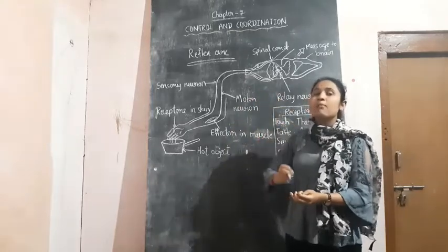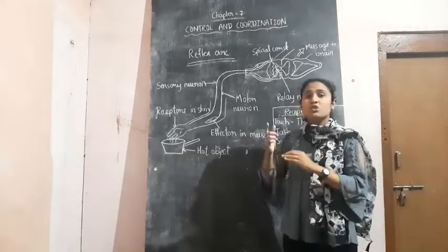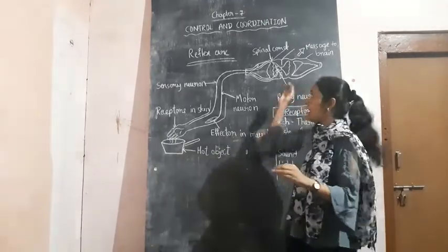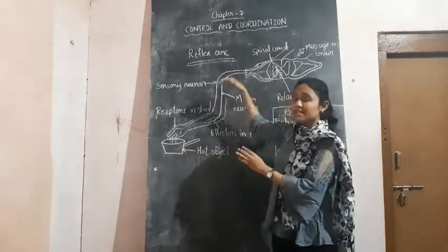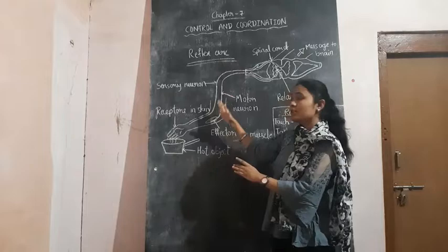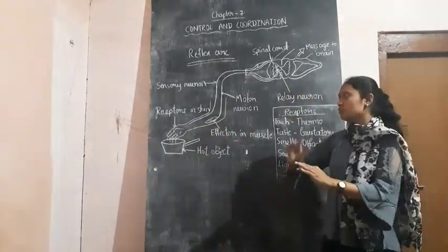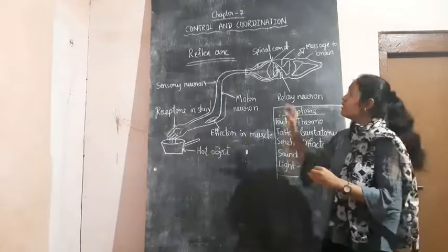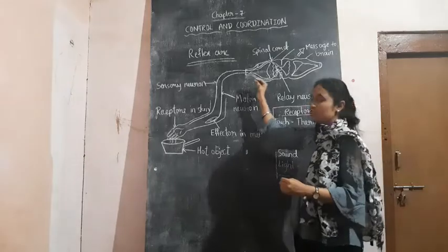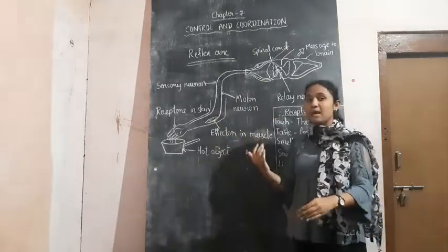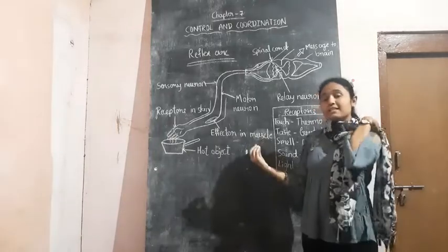The brain will think about it — it will think that this is a hot object, it may harm your hand, so take off your hand immediately. Immediately after, the response comes back to the hand and muscles through the same process, from all these neurons. When it reaches the muscle cell, you will take off your hand. So it will take too much time, and until the information reaches your hand to take it back, your hand will be burnt. What is the use of it if it takes that much time?